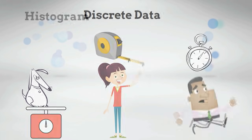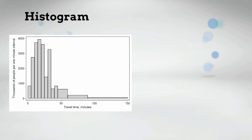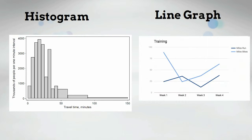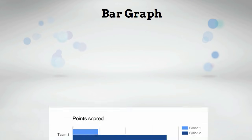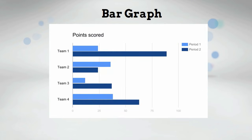Continuous data can be graphed on a histogram or a line graph. Discrete data can be graphed on a bar graph.